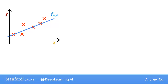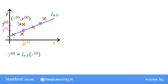Just to remind you of some notation, a training example like this point here is defined by x superscript i, y superscript i, where y is the target. For a given input x_i, the function f also makes a predictive value for y, and the value that it predicts for y is y-hat i. For our choice of model, f of x_i is w times x_i plus b. The prediction y-hat i is f_wb of x_i, where f of x_i is equal to w x_i plus b.